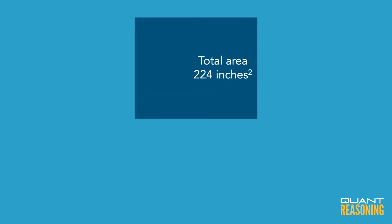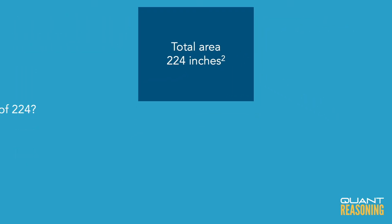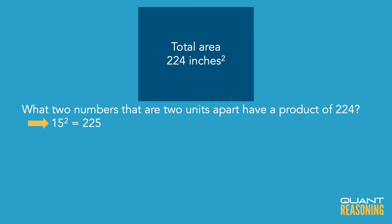Why am I talking about two numbers that are two units away from each other on the number line? Because 8 and 10 are two units away from each other, and when you add the border on top of those numbers, that gap of 2 remains. Now, if you know that 15 squared is 225, then it's probably going to be 14 times 16 that gets you 224.